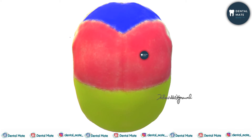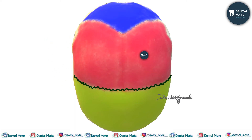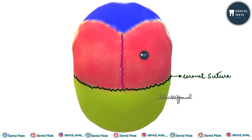The sutures seen in the Norma Verticalis: first is the coronal suture, which is present between the frontal and the two parietal bones. It crosses the cranial vault from side to side and runs downwards and forwards. After that comes the sagittal suture, placed in the median plane between the two parietal bones. Then the lambdoid suture, which is posteriorly present between the two parietal bones and the occipital bone.